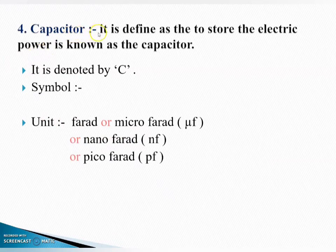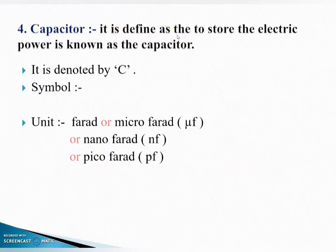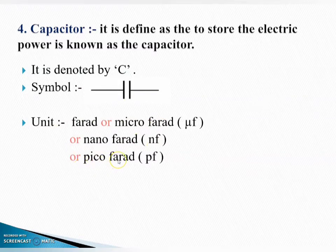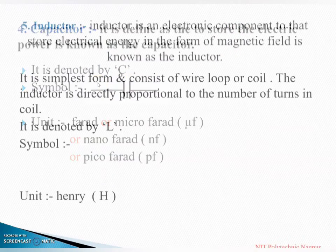Next definition is capacitor. A capacitor is defined as a device used to store electric energy. It is denoted by C, unit is farad (and also microfarad, nanofarad, and picofarad). Capacitor क्या होता है? जो electric energy store करके रखता है, उसे हम capacitor बोलते हैं.